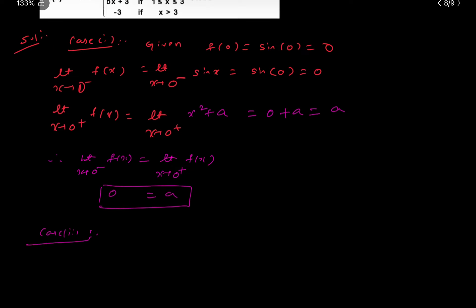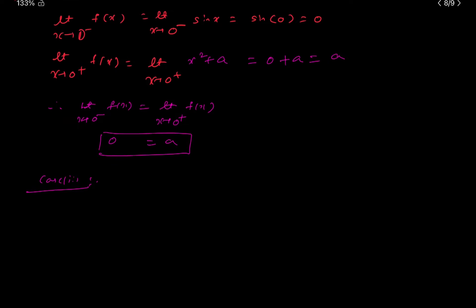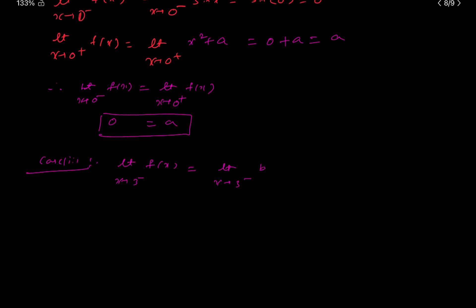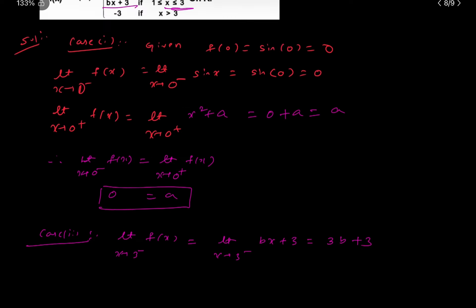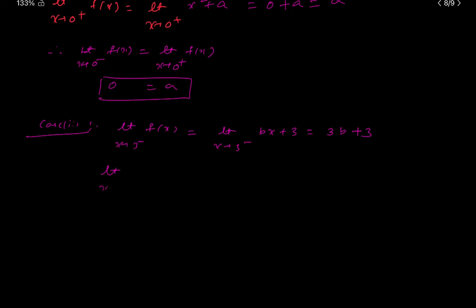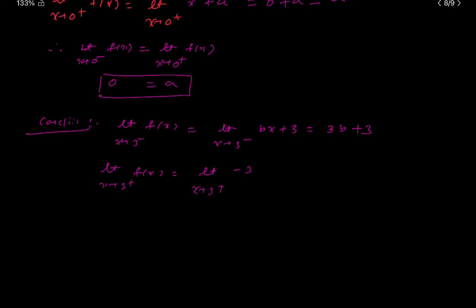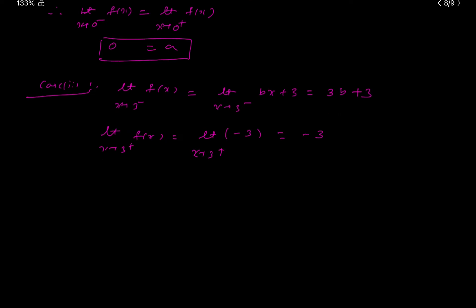Similarly, case 2 at x = 3. f(3) = a. The limit as x tends to 3 minus of f(x) equals limit x tends to 3 minus, and for x less than 3 the value is bx + 3, so that equals 3b + 3. Similarly, the limit as x tends to 3 plus of f(x), for x greater than 3, equals minus 3.